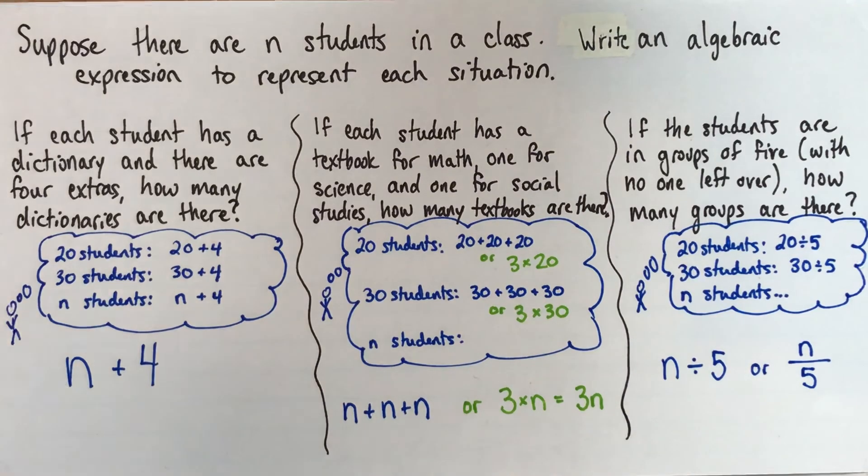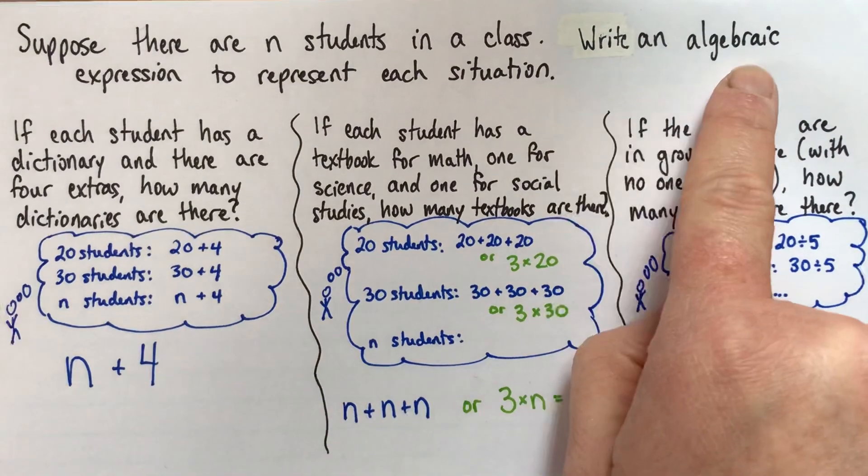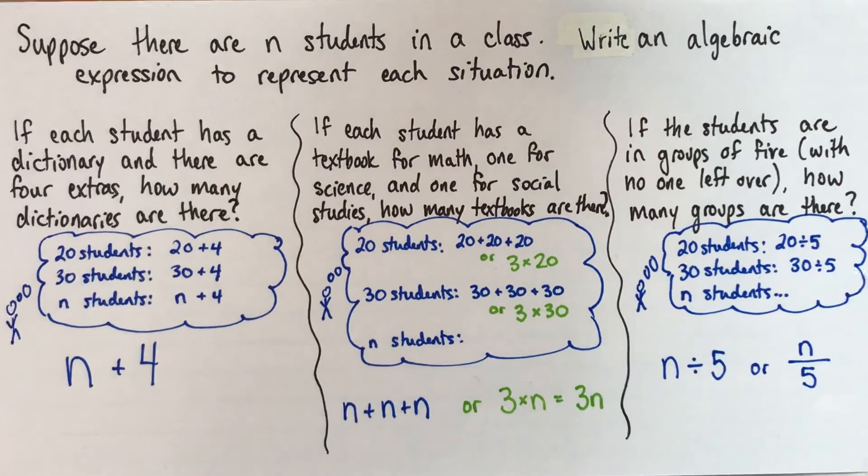So if you're trying to write an algebraic expression, think: what would I do if it was numbers? If instead of n students I had 20 or 30 students, write down a few examples until the pattern becomes clear, then replace your number with the variable. Just to stress one last thing: these are the final answers. n plus 4, n plus n plus n, 3n, and n divided by 5 — we don't need to do anything else, because the question asks for an algebraic expression. Good luck with it.